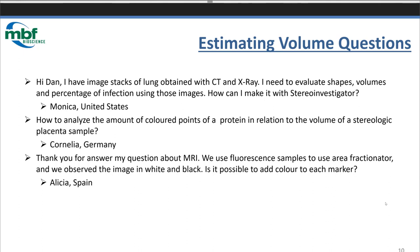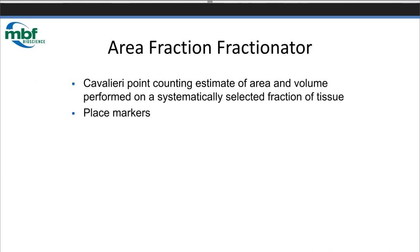We're having questions about placenta and about lung. A lot of you are in the neuroscience field, but whatever the tissue or organ, as long as you can do the systematic random sampling and get the images into Stereo Investigator, we can estimate volume. Alicia asks about using fluorescent samples with area fractionator — when I show an example of area fraction fractionator, you're going to see that we do use different colored markers. That's integral to the probe. The answer to estimate percent by volume is to use the area fraction fractionator.